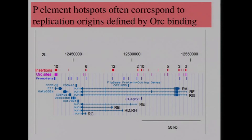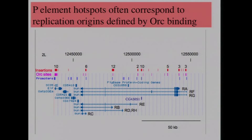Thanks to the ModEncode data, I noticed a very striking correlation beyond the promoter correlation. What I've plotted is the ModEncode ORC site data — replication origin data from Drosophila cultured cells — and here are the insertions. There's a lot of overlap between ORC sites and promoters, which is not unexpected because some of the same transcription factors that activate genes also activate replication origins. In developmental biology, the most abundantly expressed genes have origins right near their five-prime ends, very close to the promoter.